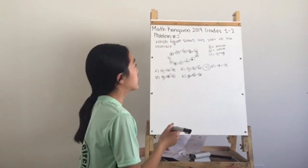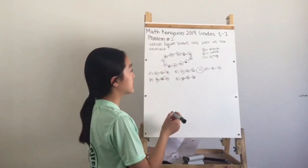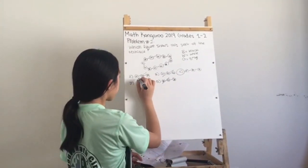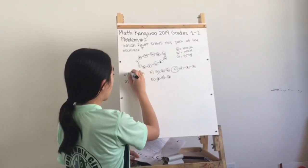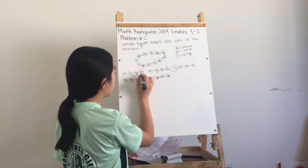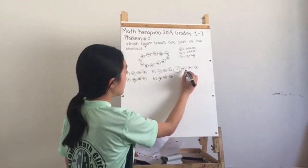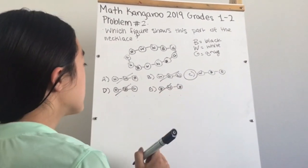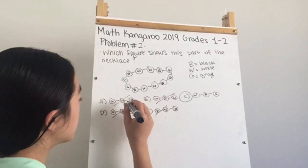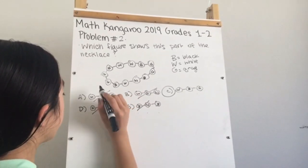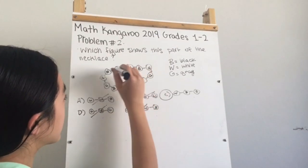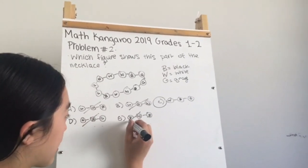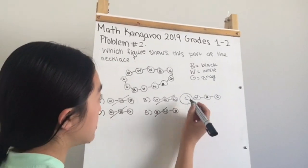Problem number two asks which figure shows a part of the necklace. We must look at each possible answer and compare it to the necklace pattern. The portions shown in options A, B, D, and E do not exist anywhere in the necklace diagram, which gives us the answer of C.